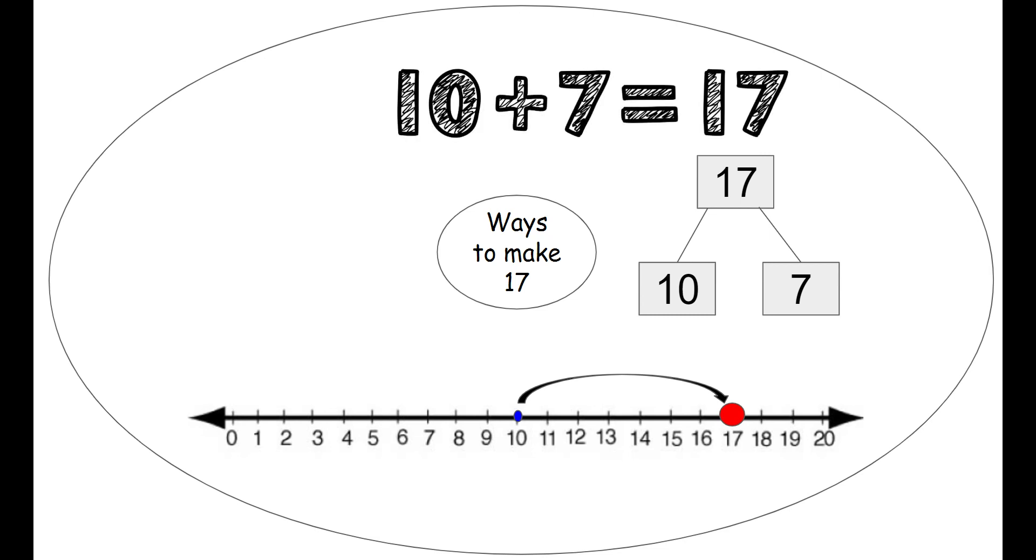We can also use our number sentence to make the 17. We say 10 plus 7 equals 17.